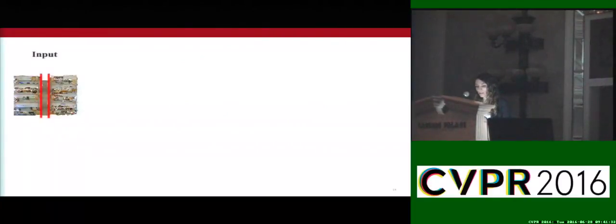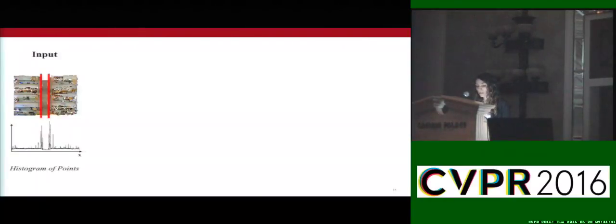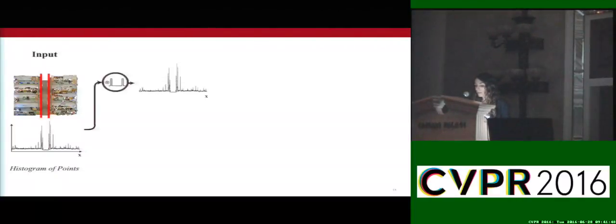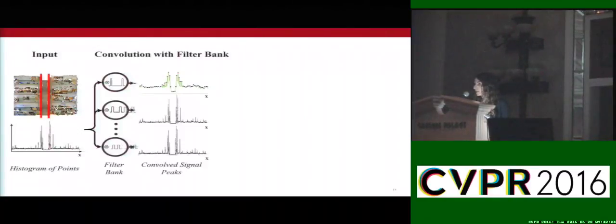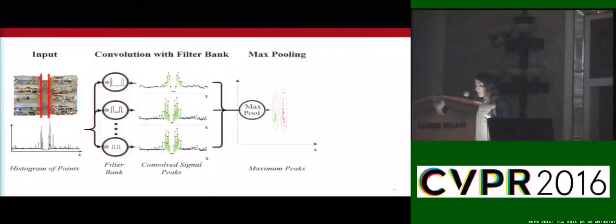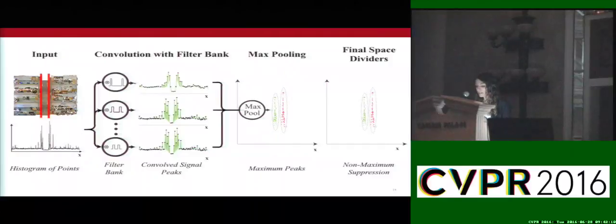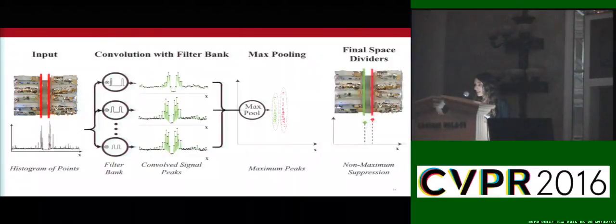We design a filter which looks for this signature pattern in the point cloud. We project the points on one of its main Cartesian axes — let's say x — and form the histogram of points. The wall roughly appears with a peak, gap, peak signature in this signal. We convolve this signal with a template of the same peak-gap-peak form, which fires whenever such a pattern is observed. However, the parameters of this template, such as the width of the gap, are not known a priori and differ between buildings. Therefore, we form a filter bank with different parameters and perform max pooling across the filters in the bank. Finally, we identify the space dividers by applying non-maximum suppression on the signal.